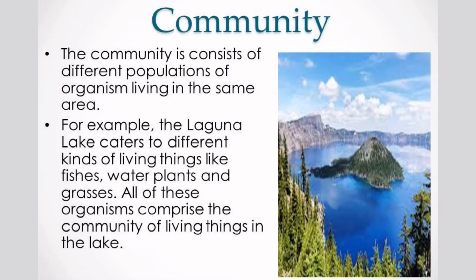All the populations that live in the same location make up a community. The community consists of different populations of organisms living in the same area. For example, the Laguna Lake caters to different kinds of living things like fishes, water plants, and grasses. All of these organisms comprise the community of living things in the lake.